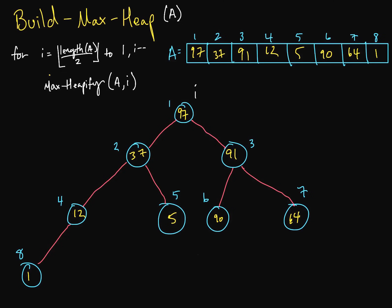And now we should have a max heap. So let's check. Is thirty-seven and ninety-one less than ninety-seven? Yes. Is twelve and five less than thirty-seven? Yes. Is ninety and sixty-four less than ninety-one? Yes. Is one less than twelve? Yes. And we have successfully built a max heap.